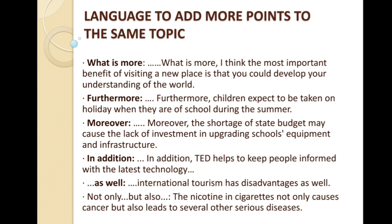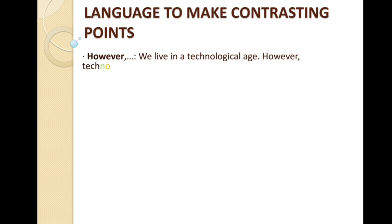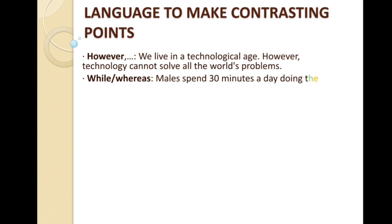These are the words to use when adding more points to the same topic, whether writing in favor of or against a question statement. After this we have words for giving contrasting points — opposite arguments. We can use 'however' for an opposite statement. For example: 'We live in a technological age; however, technology cannot solve all the world's problems.' Using these words, we can give the opposite statement of the previous one. The list continues with 'while' and 'whereas.'